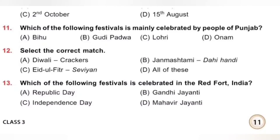Question 12: Select the correct match. A. Diwali — Crackers, B. Janmashtami — Dahi Handi, C. Eid ul Fitr — Sewian, D. All of these. Crackers are burned during Diwali. Dahi Handi is broken during Janmashtami. And Sewian are made during Eid ul Fitr. All the options are a correct match, so Option D, all of these, is the correct answer.